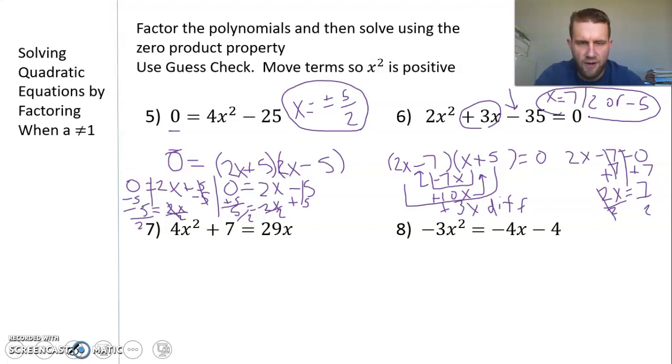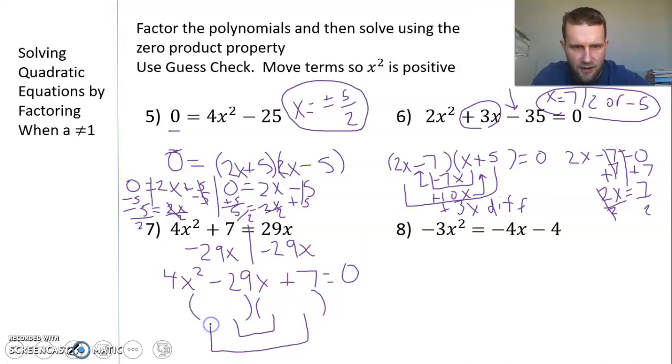Looking at number 7, I always want to keep x² positive, so I want to move everything to the left. We're going to move 29x to the other side by subtracting 29x from both sides. So I have 4x² - 29x + 7 = 0. Then go right into your guess-check setup. You're trying to add to -29x, and the plus means it's a sum of -29. Keep your inner and outer values under 29. A hint: don't use 2 and 2 for 4 because 29 is odd. Do 4x and 1x, and I think with 7 and 1 you'll be able to find that.